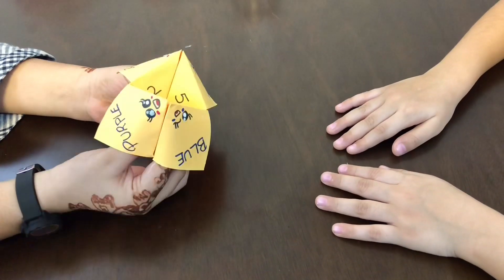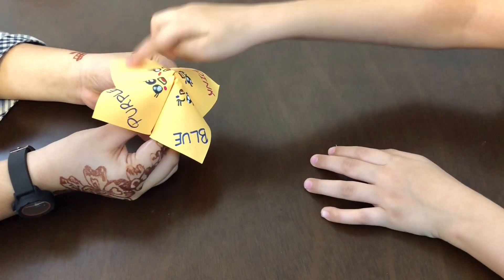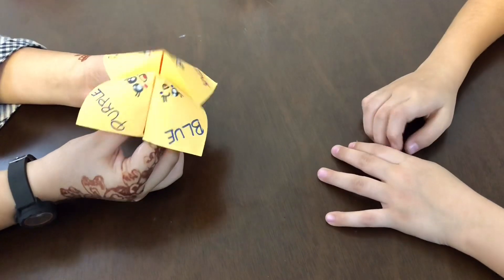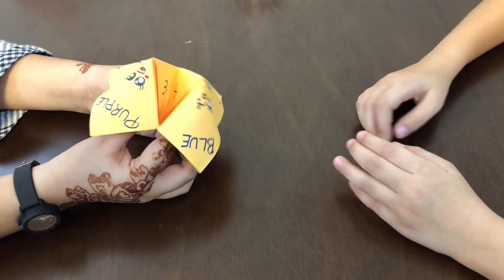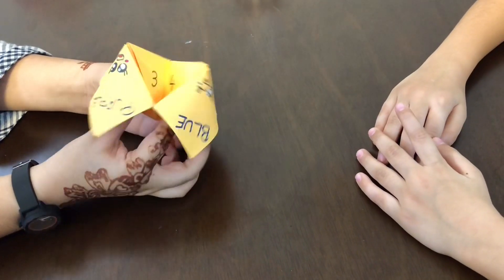Color, color, which color do you choose? I choose red. R-E-D. Choose a number. I choose three. T-H-R-E-E. Three.